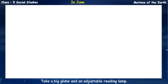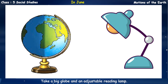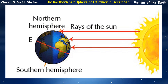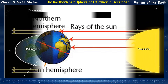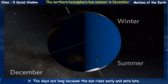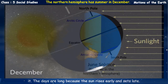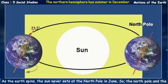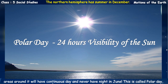First, let's see what happens in the month of June. Take a big globe and an adjustable reading lamp. Place the lamp in the center of a table – it represents the sun. Look at the given diagram and place the globe in the position marked June. Make sure the axis is tilted in the same direction. Turn on the lamp and focus the light on the globe. The Northern Hemisphere is tilted towards the sun and the rays of the sun fall directly on it, so it has summer. The days are long because the sun rises early and sets late. The sun never sets at the North Pole in June, so the North Pole and areas around it have continuous day – this is called Polar Day, and the sun is called the Midnight Sun.